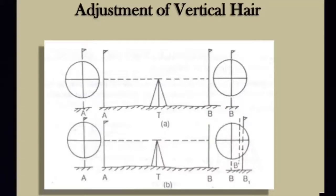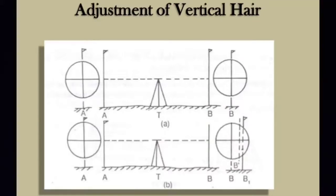Then, the ranging rod at A is correctly bisected. After bisecting A, the ranging rod at B is taken and the telescope is transited and bisected again.